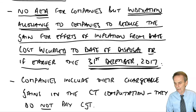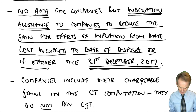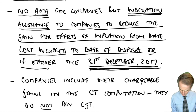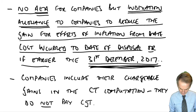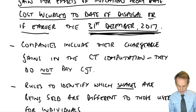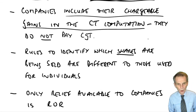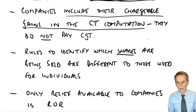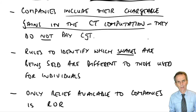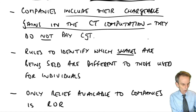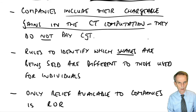So we get that figure of gain. But what we're then able to do is to reduce further that chargeable gain by a deduction known as indexation allowance — to take account of the effects of inflation as measured by our Retail Prices Index or RPI, from the date of acquisition through to December 2017, given that we're likely dealing with disposals for accounting periods ended in 2020 or 2021.